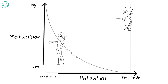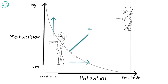If someone is below the action line, we need to get them above it for the trigger to instigate the performance of the behavior. Either we need an increase in motivation, or the behavior needs to be easier for them to do, or both.